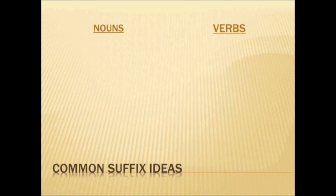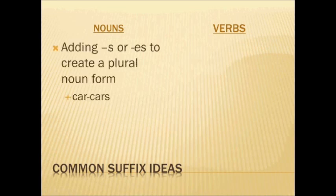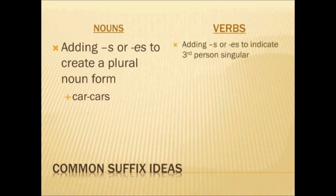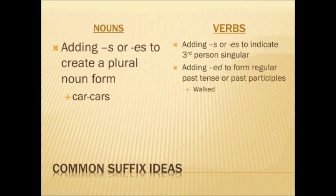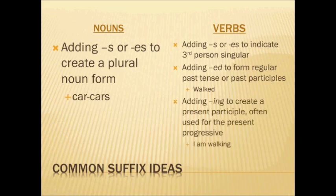Suffixes bring with them specific ideas that help identify characteristics of that part of speech. For example, many nouns can be singular or plural — one way to do this is to add a suffix. Adding a final -s or -es creates a plural noun form; for example, 'car' becomes 'cars.' Verbs can also add -s or -es, but their meaning would be different — in that case, it indicates a third-person singular idea. We also add the suffix -ed to form a regular past tense or past participle, such as in 'walked.' And adding -ing creates a present participle, often used for the present progressive, such as in 'walking.'